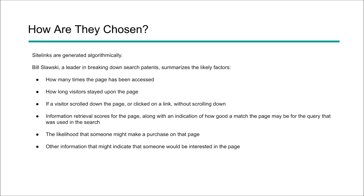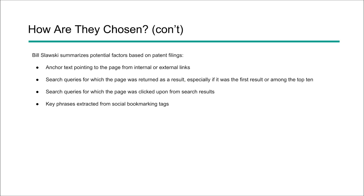These are typically pages that Google has said are going to move users to the content they're looking for as soon as possible. There are also some other potential factors from Bill Slosky: anchor text pointing to a page from internal or external links; search queries, which could play a role in what was returned — especially if it's the first result — and what page was clicked on within the search results; and key phrases extracted from social sites online that indicate the popularity of a page.